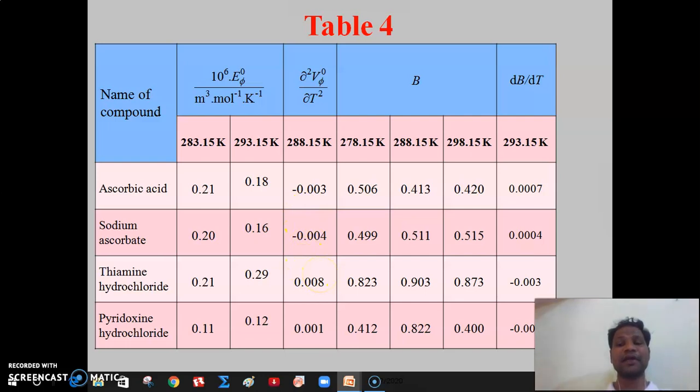Also, we have calculated dB by dT values. It is observed that positive values of dB by dT for ascorbic acid and sodium ascorbate are obtained. This concludes that ascorbic acid and sodium ascorbate are water structure breakers whereas thiamine hydrochloride and pyridoxine hydrochloride are water structure makers when dissolved in aqueous media.